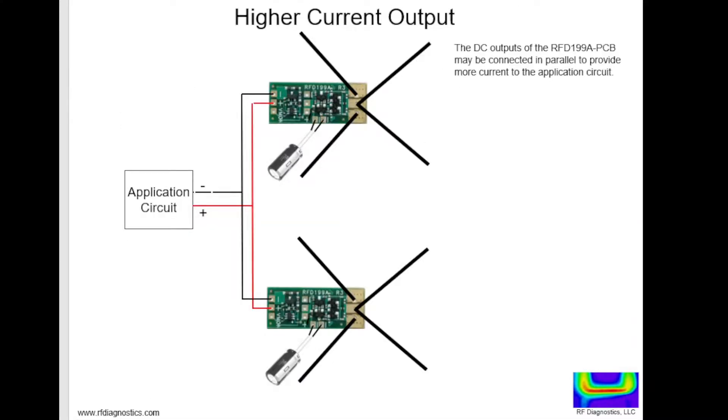We have a lot of customers asking for more current in order to charge mobile phones or higher power circuits. The single RFD199A can put out at most 100 milliamps, typically closer to 50 to 100 milliamps depending on your load. But there is a hard limit at 100 milliamps.